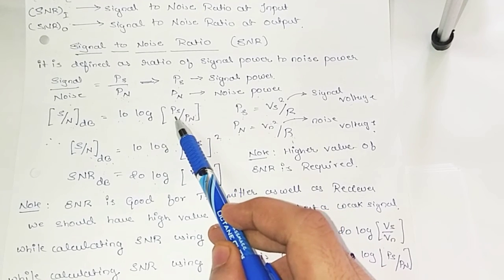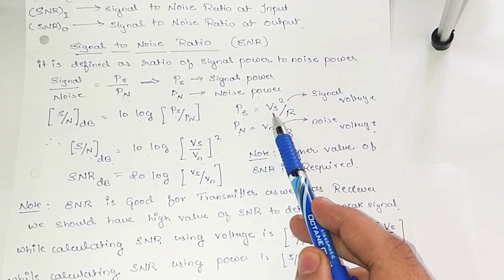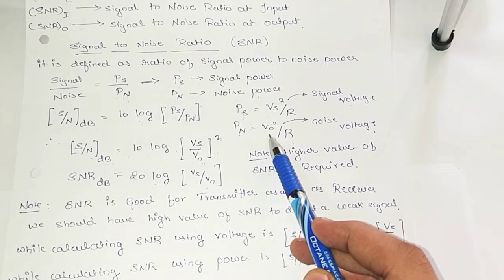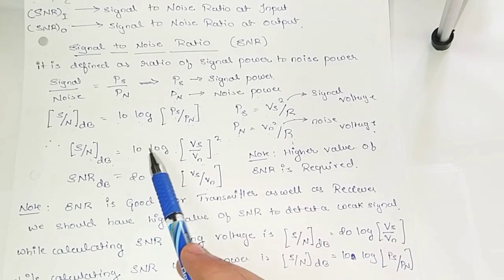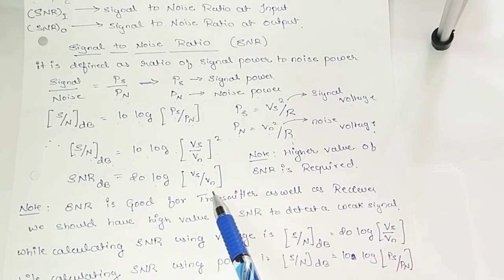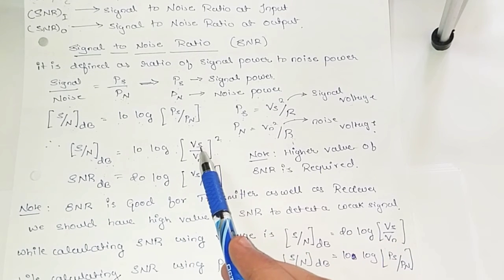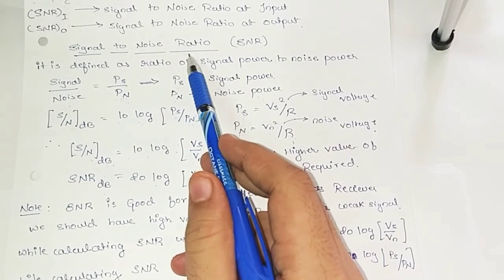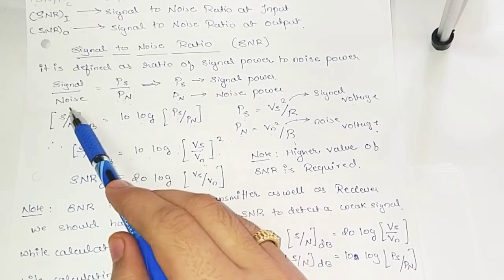If I want to express SNR in terms of voltages, I will convert the formula. PS is nothing but VS² / R, where VS is the voltage of the signal and R is the resistance. PN equals VN² / R, where VN is the voltage of the noise. Substituting, I get 10 log (VS / VN)², and since the R's cancel, SNR in dB equals 20 log (VS / VN). The factor of 20 comes from the logarithm property: log of a quantity raised to power N equals N times log of that quantity.